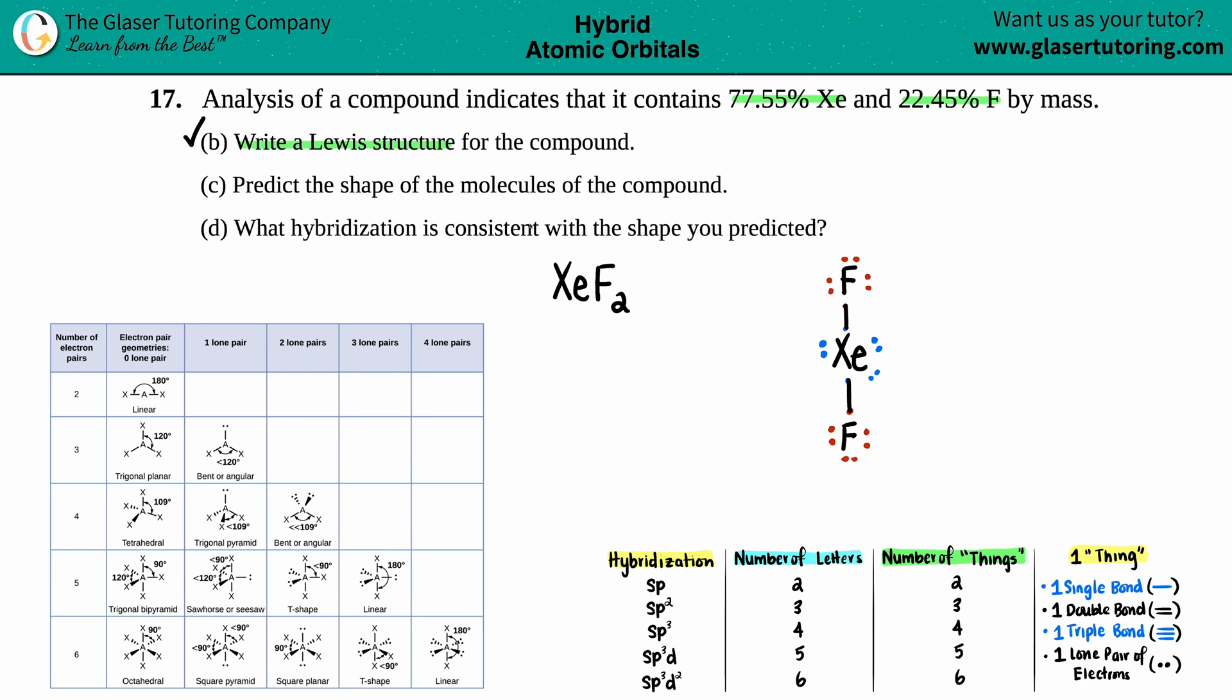Now it says predict the shape of the molecules of the compound. I think we only have one molecule here, so I'm going to strip away this plural and we're just going to predict the shape. Whenever we're predicting the shape, we always look at the center element. So you always see what's going on with the center element.